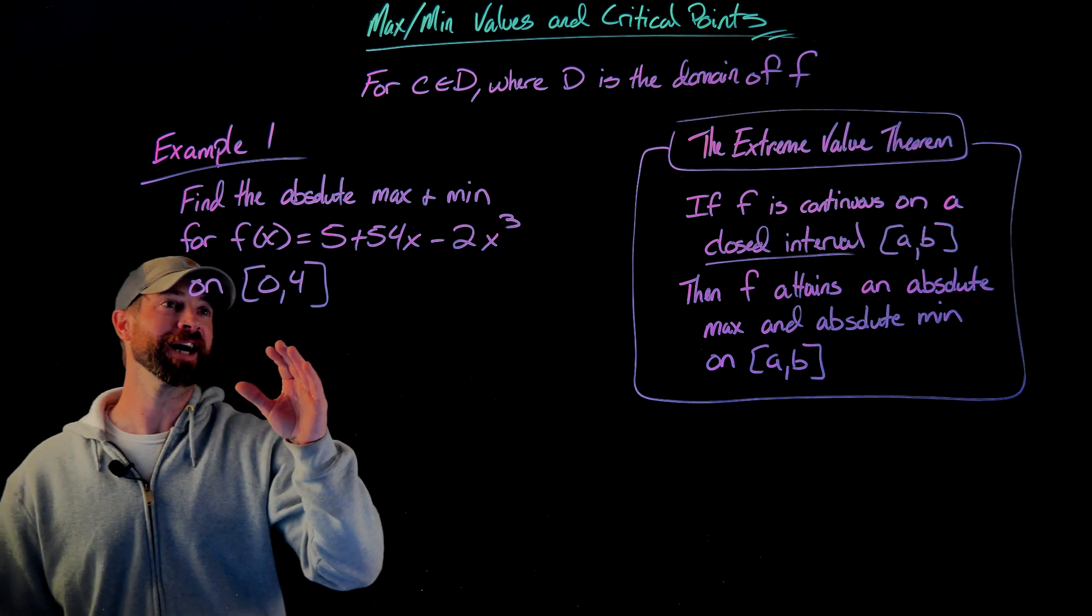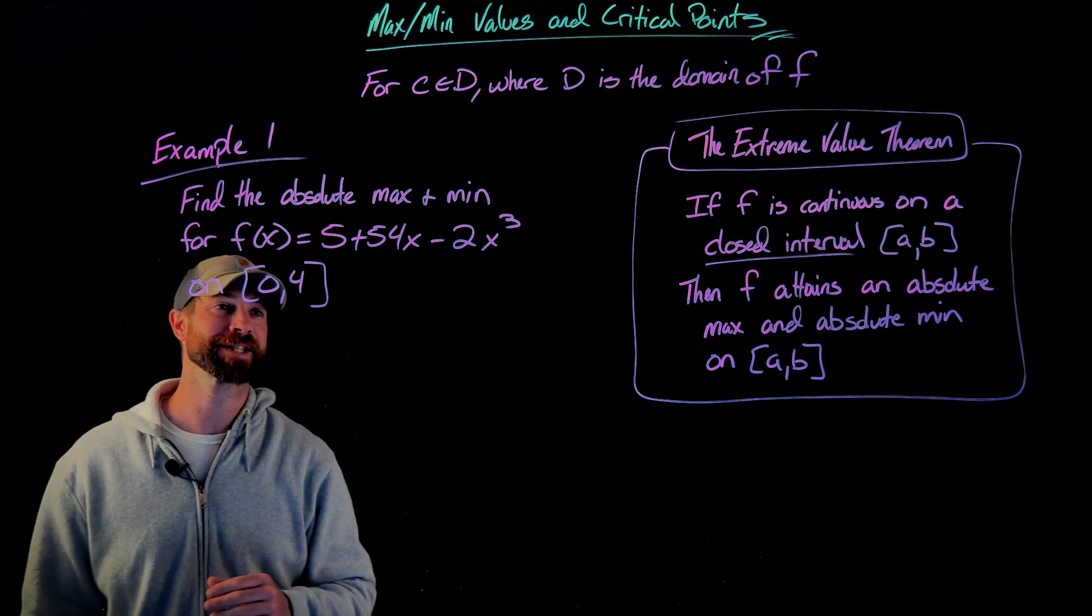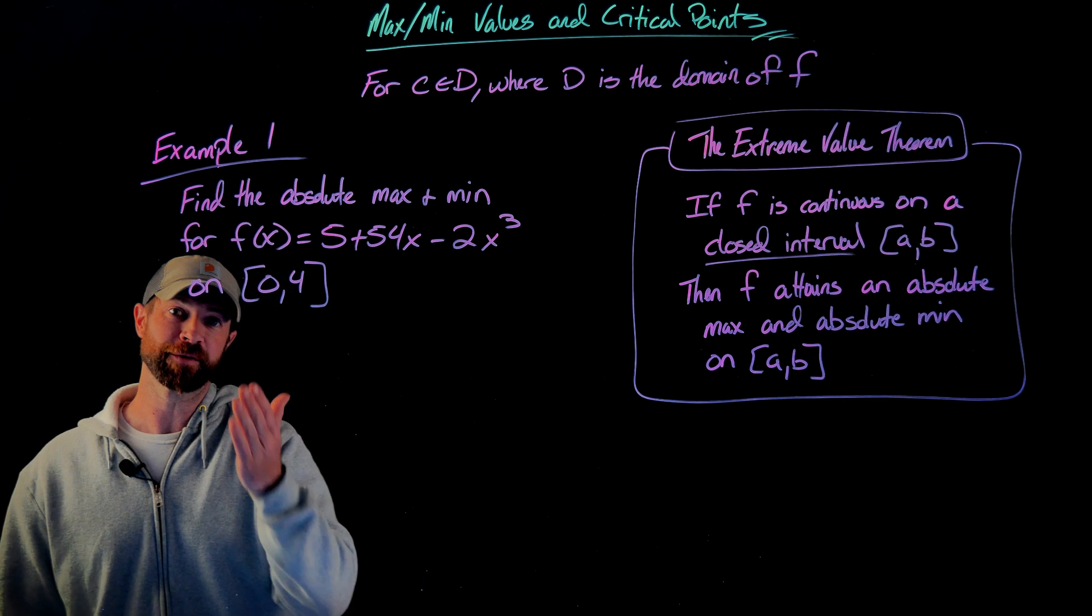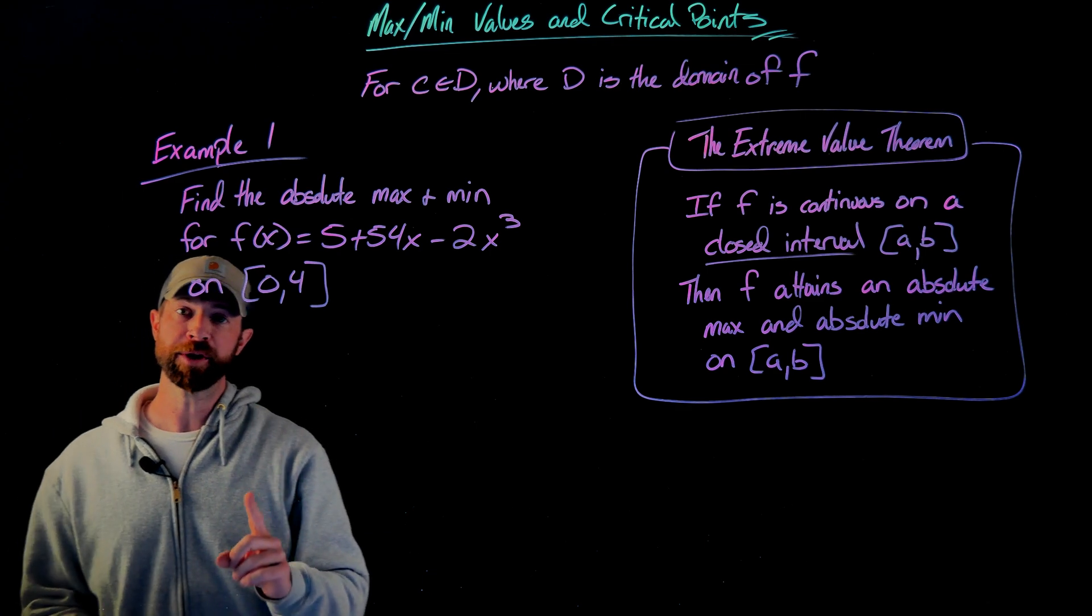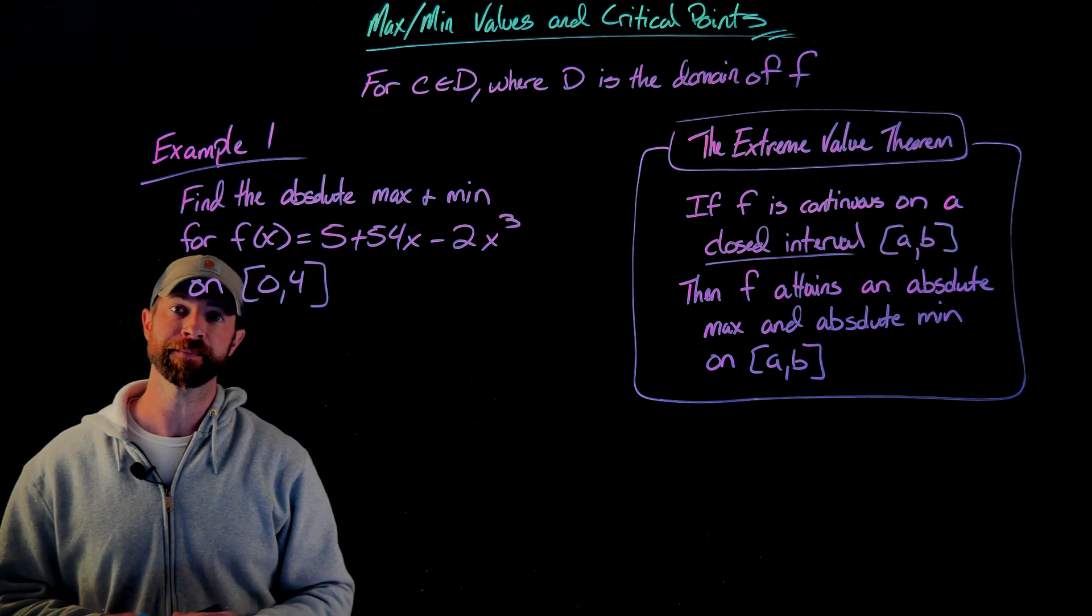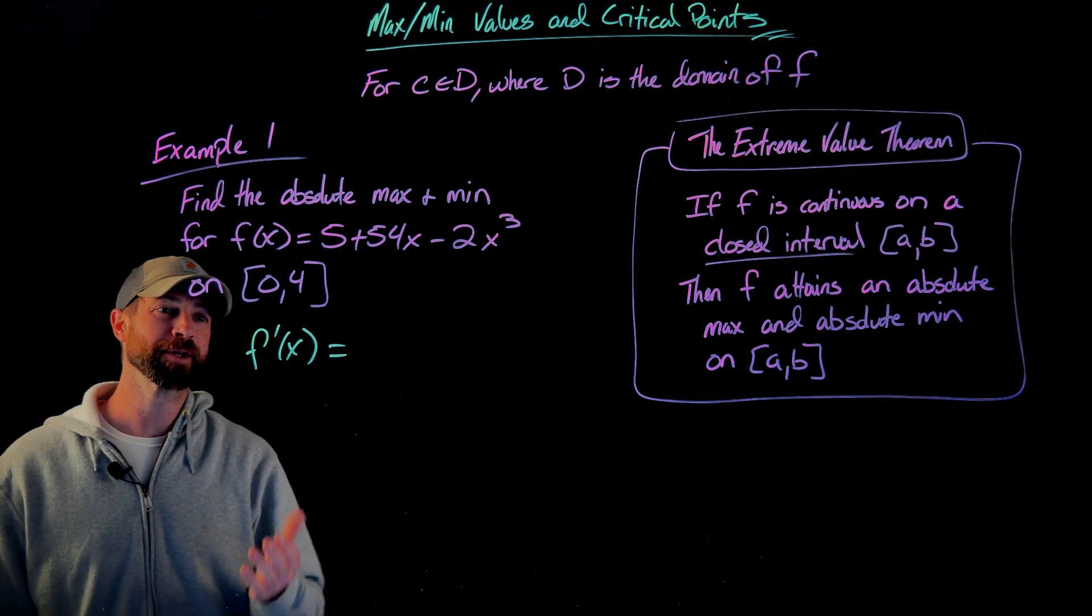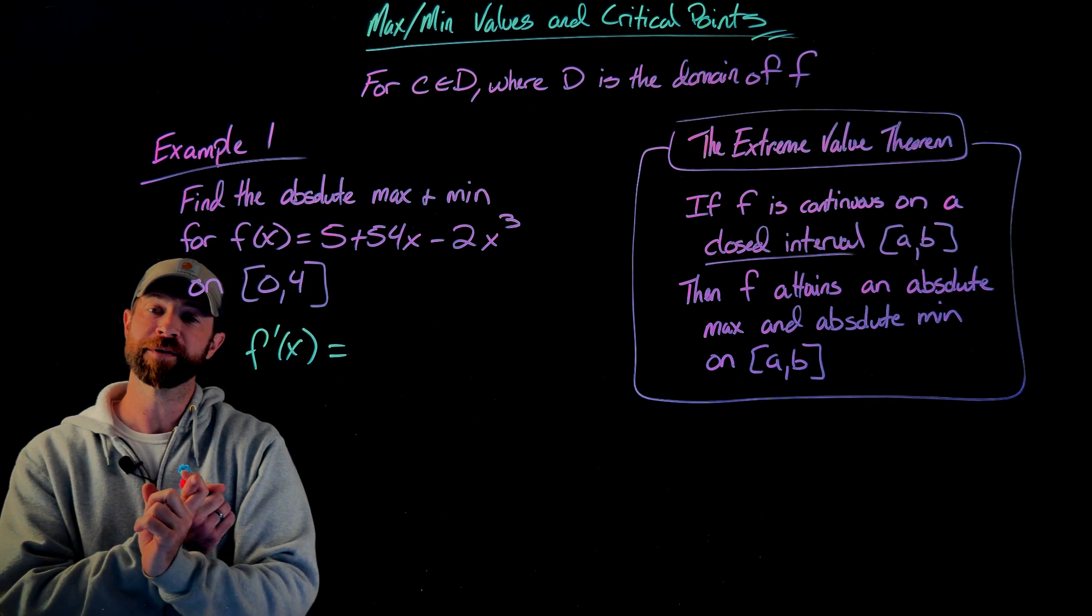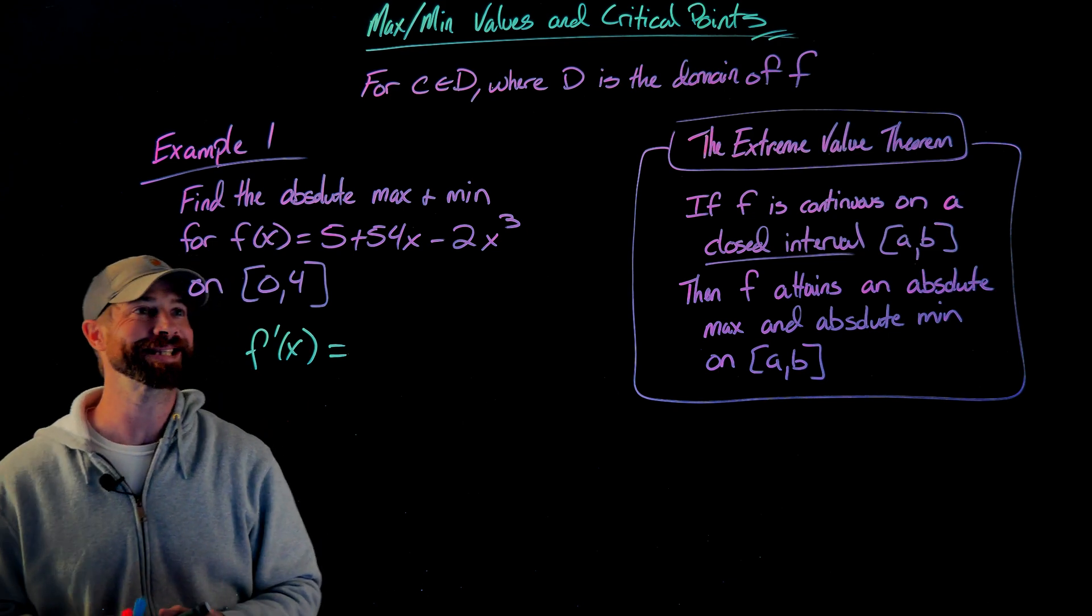Here we're given a polynomial, 5 + 54x - 2x³ on a closed interval from 0 to 4. What we're going to do is first identify all of the critical numbers for this function. To find the critical numbers, I'm going to differentiate it and find out where the derivative is equal to 0 or where it doesn't exist.